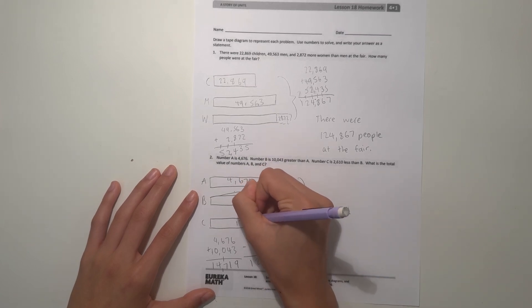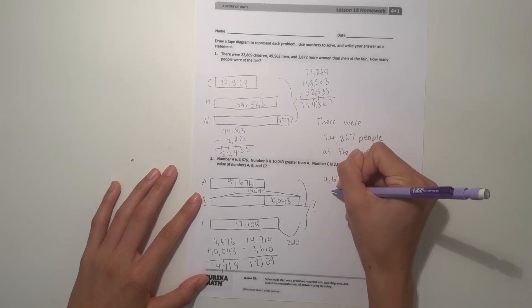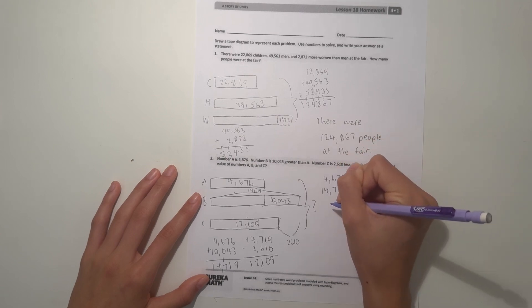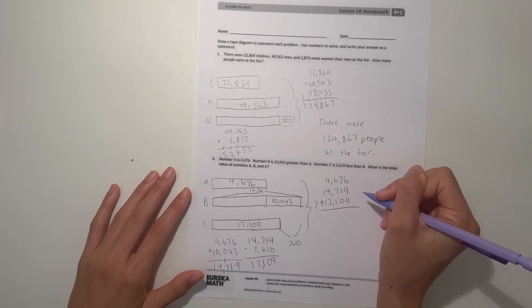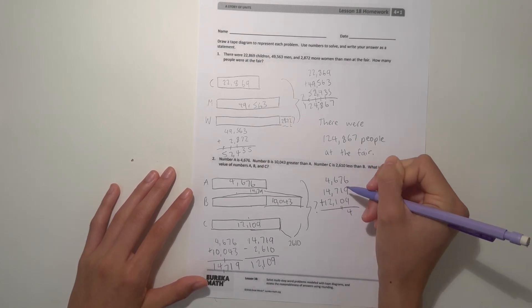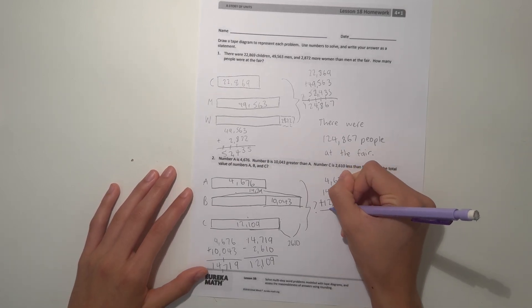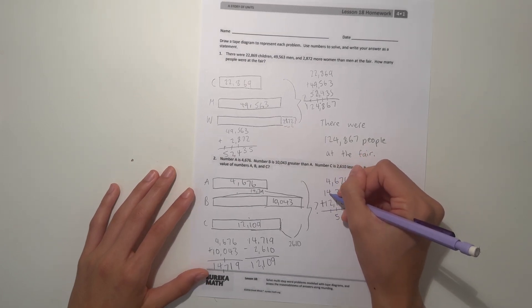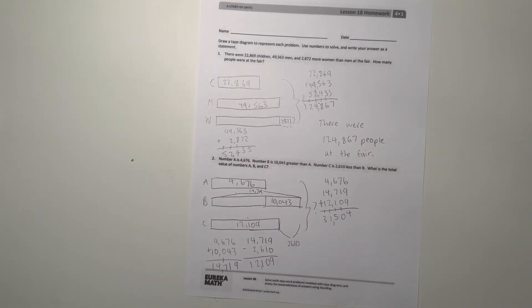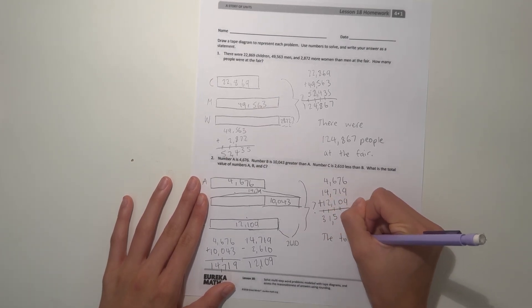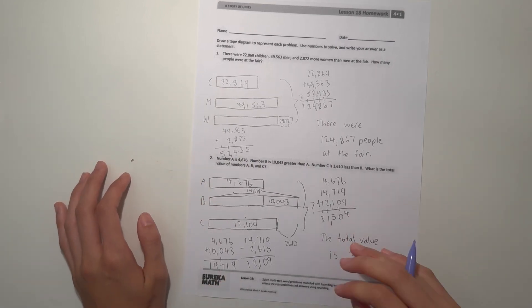Let's find the total amount. A is 4,676, B is 14,719, and C is 12,109. Let's add all together: 6 plus 9 is 15 plus 9 is 24, 7 plus 1 is 8 plus 0 is 8 plus 2 is 10, 6 plus 1 is 11, and then 1 plus 1 plus 1 is 3. So our answer is 31,504. The total value is 31,504.